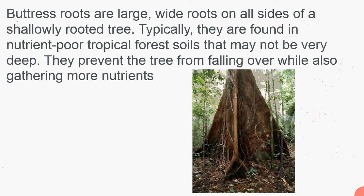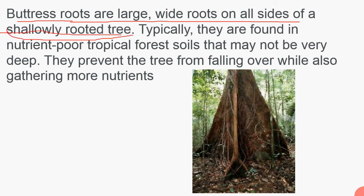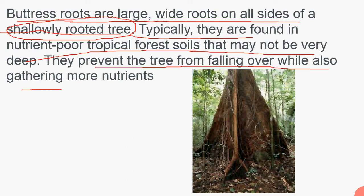Buttress roots are large wide roots on all sides of a shallowly rooted tree. Shallowly rooted means the root does not go very deep. Typically they are found in nutrient-poor tropical forest soil that may not be very deep. They prevent the tree from falling over while also gathering some nutrients. Because the root doesn't go deep, the chances of falling increase, so the plate-like structure on the sides provides extra support and also helps in gathering nutrients — the more the roots spread, the more nutrients they can access.